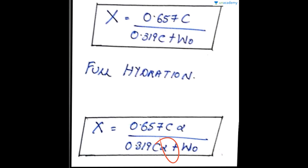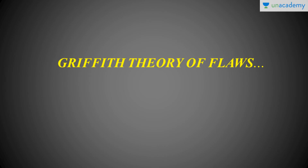There was a problem: the theoretical strength calculated was much higher than the actual strength of the concrete. The actual strength obtained from concrete is much lower than the theoretical strength from these equations. This is where the Griffith theory of flaws comes in. Flaws mean the imperfections, errors, or deficiencies present in a matrix.